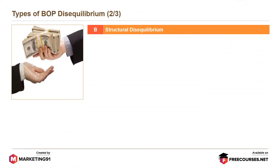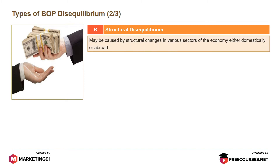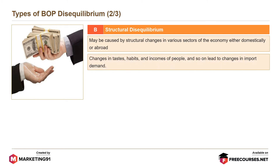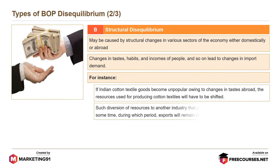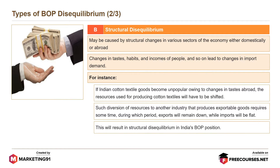Next is structural disequilibrium, which may be caused by structural changes in various sectors of the economy, either domestically or abroad. Changes in tastes, habits and incomes of people lead to changes in import demand. For instance, if Indian cotton textile goods became unpopular owing to changes in tastes abroad, the resources used for producing cotton textiles would have to be shifted to another industry producing exportable goods. This transition requires time, during which exports will remain down while imports remain flat, resulting in structural disequilibrium in India's BOP position.